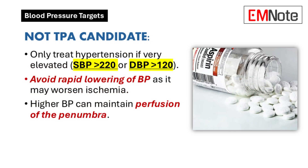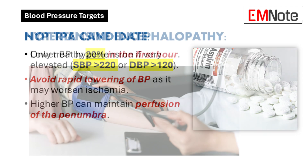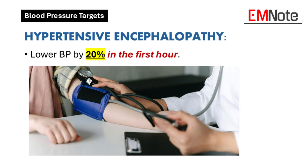For non-tissue plasminogen activator candidates, intervention is indicated only for severe hypertension. Rapid blood pressure reduction should be avoided due to potential ischemia exacerbation. Enhanced perfusion pressure may be beneficial for penumbral tissue preservation. In hypertensive encephalopathy cases, blood pressure reduction of 20% is indicated within the first hour.